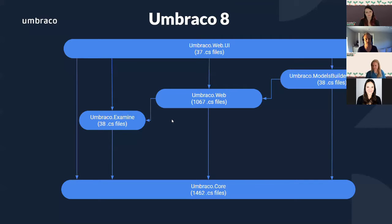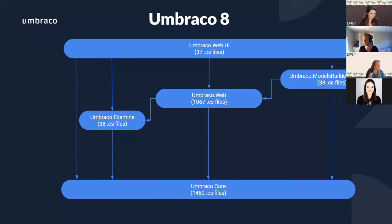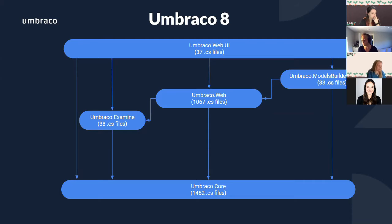First we need to talk about what Umbraco 8 is and what the difference is to .NET Core. The architecture of Umbraco 8 had a few assemblies — mainly Umbraco Core and Umbraco Web had all the code base. About 1,000 CS files in the web and almost 1,500 files in Umbraco Core. Files is not a great measure, but most of the code base is located in these two assemblies.